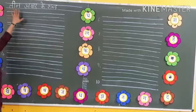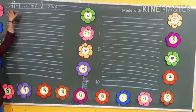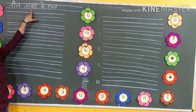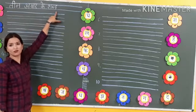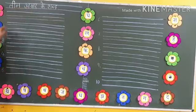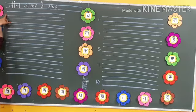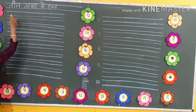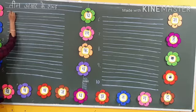First, tell your mama to write the heading: teen akshar ke shabd. Okay? Then after, I am going to write here from number first. Write between the lines.